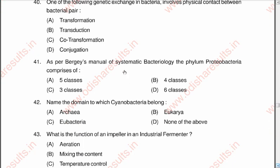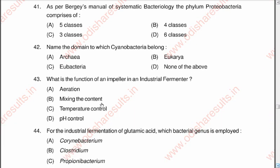Question 41: As per Bergey's manual of systematic bacteriology, the phylum Proteobacteria comprises A five classes, B four classes, C three classes, D six classes. The correct option is A, five classes. Question 42: Name the domain to which cyanobacteria belong — A Archaea, B Eukarya, C Eubacteria, D none of the above. The correct option is C, Eubacteria.